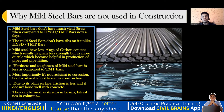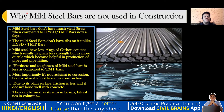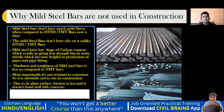Due to its plain surface, friction is less and it doesn't bond well with concrete. As you can see, mild steel has a plain surface whereas the newer rebars have ribs. Because of those ribs, good friction happens between the concrete and the rebar. We don't use mild steel for stirrups either — we use HYSD or TMT for that.